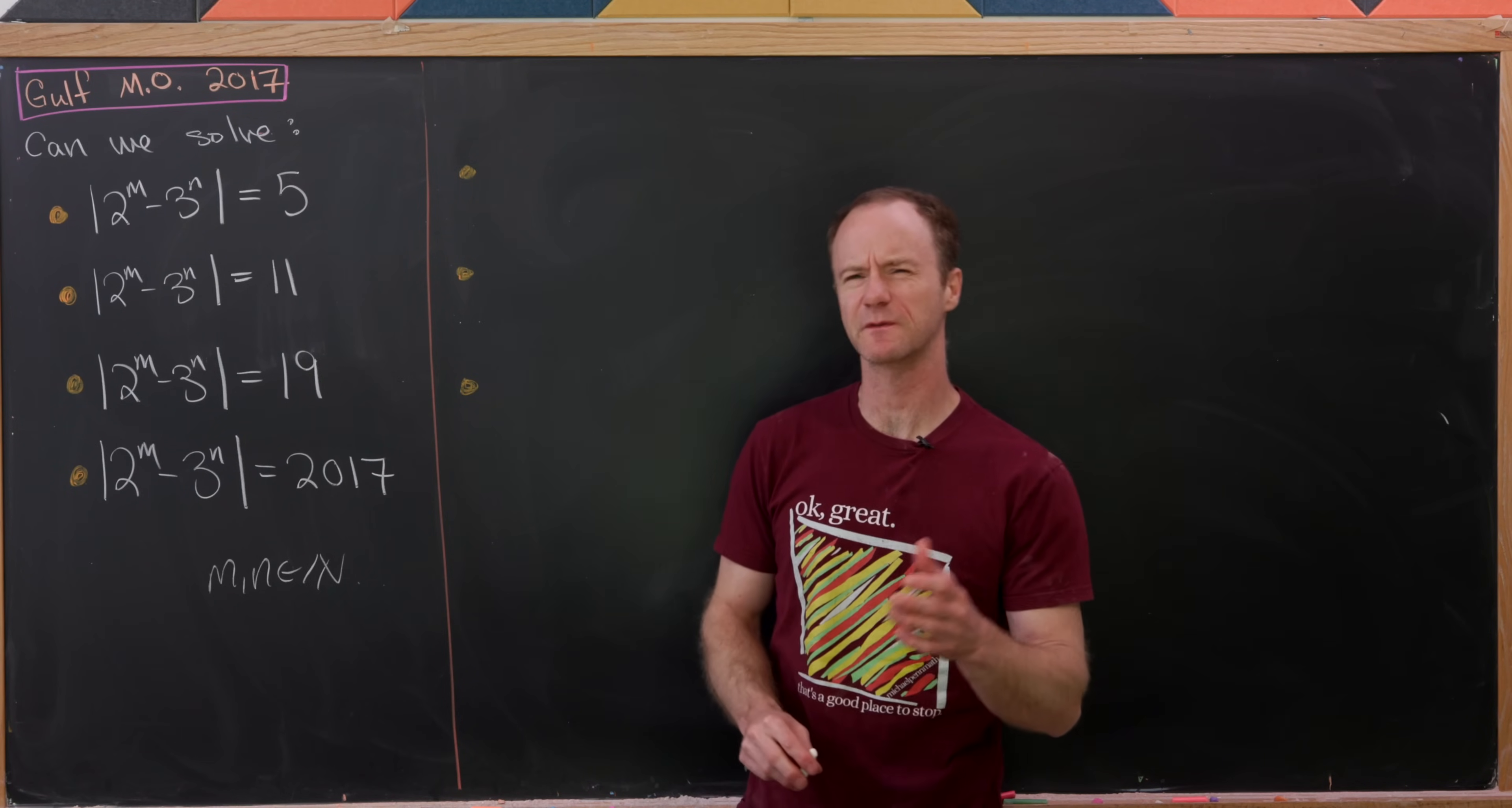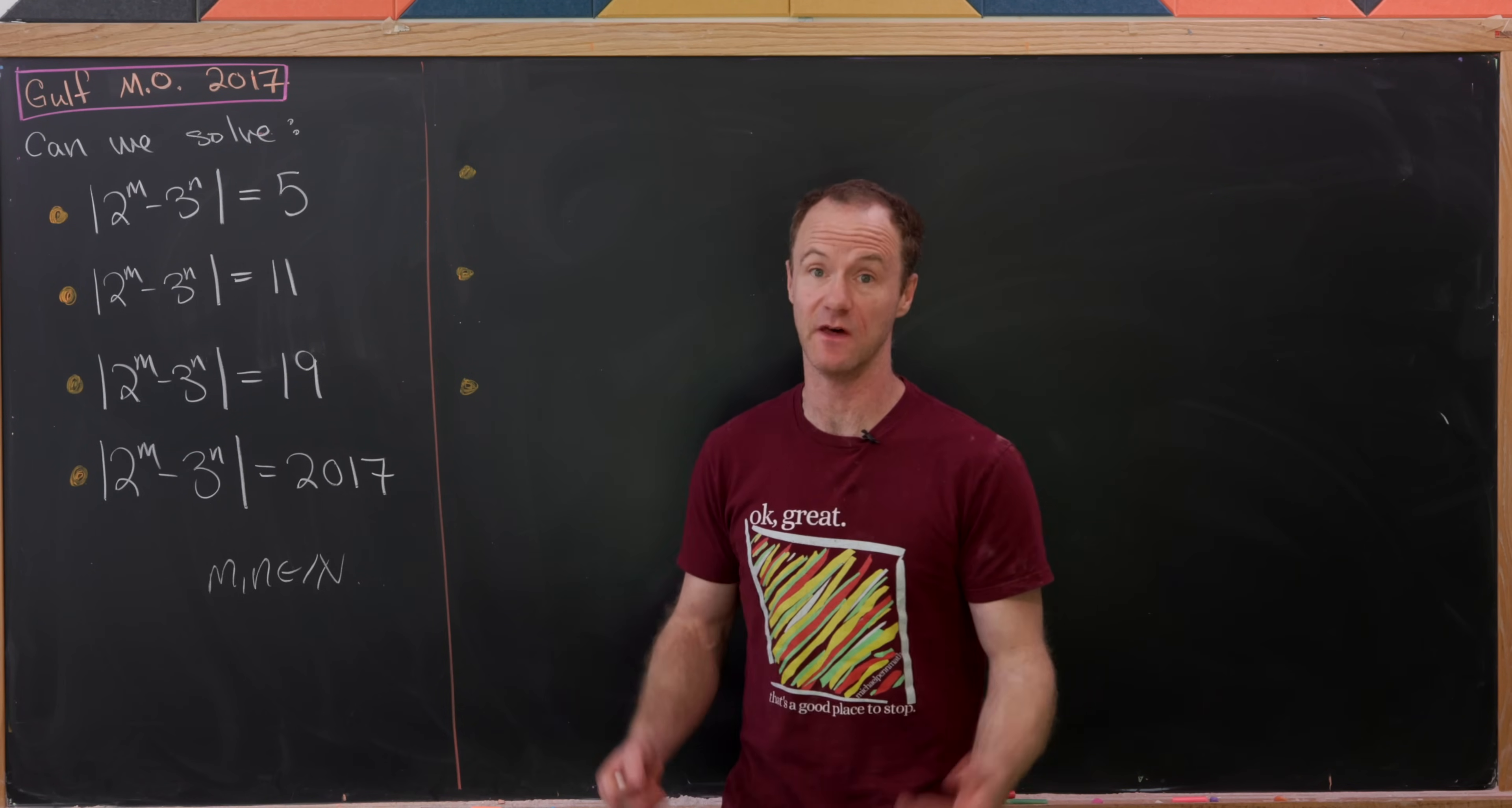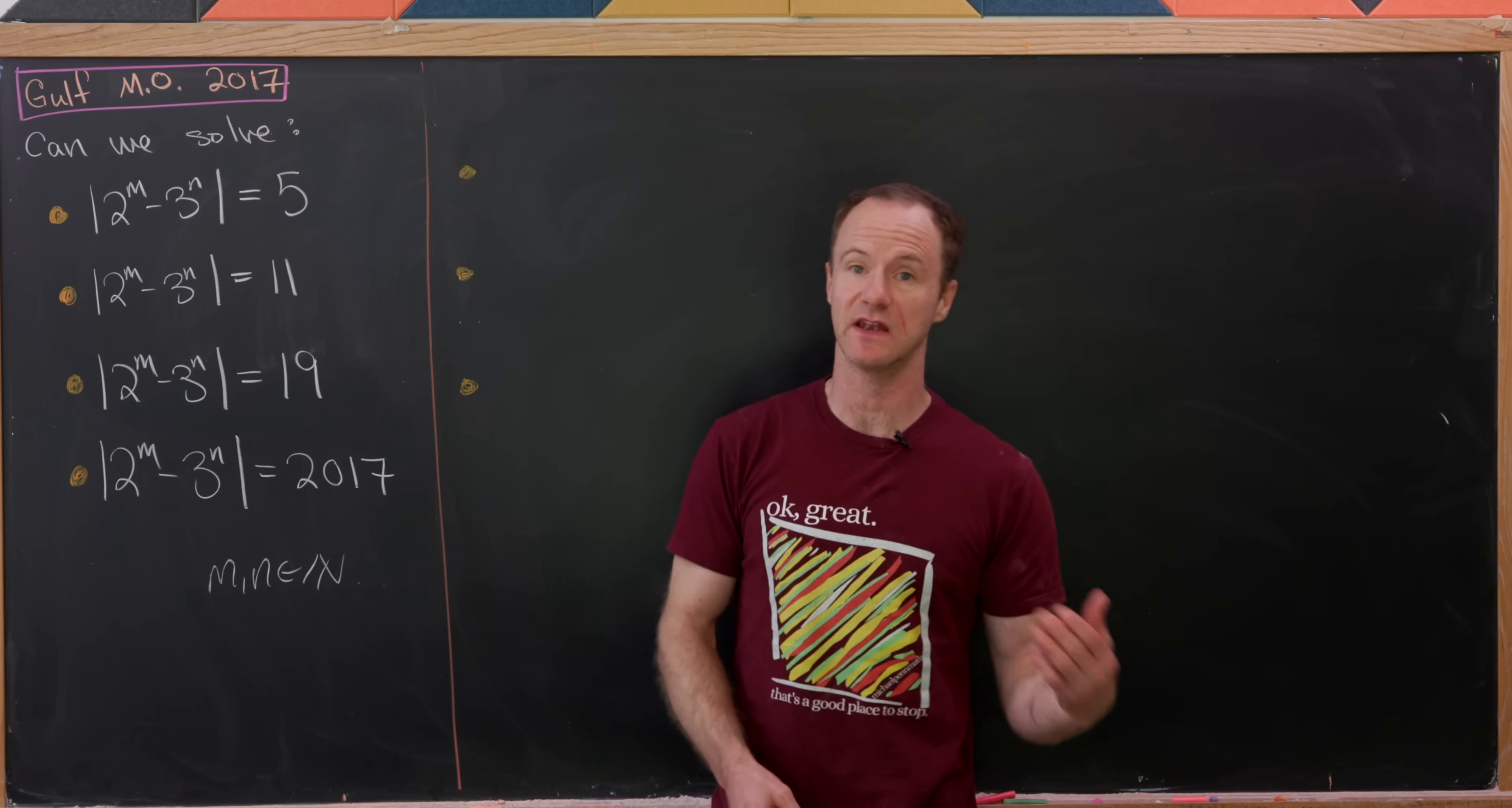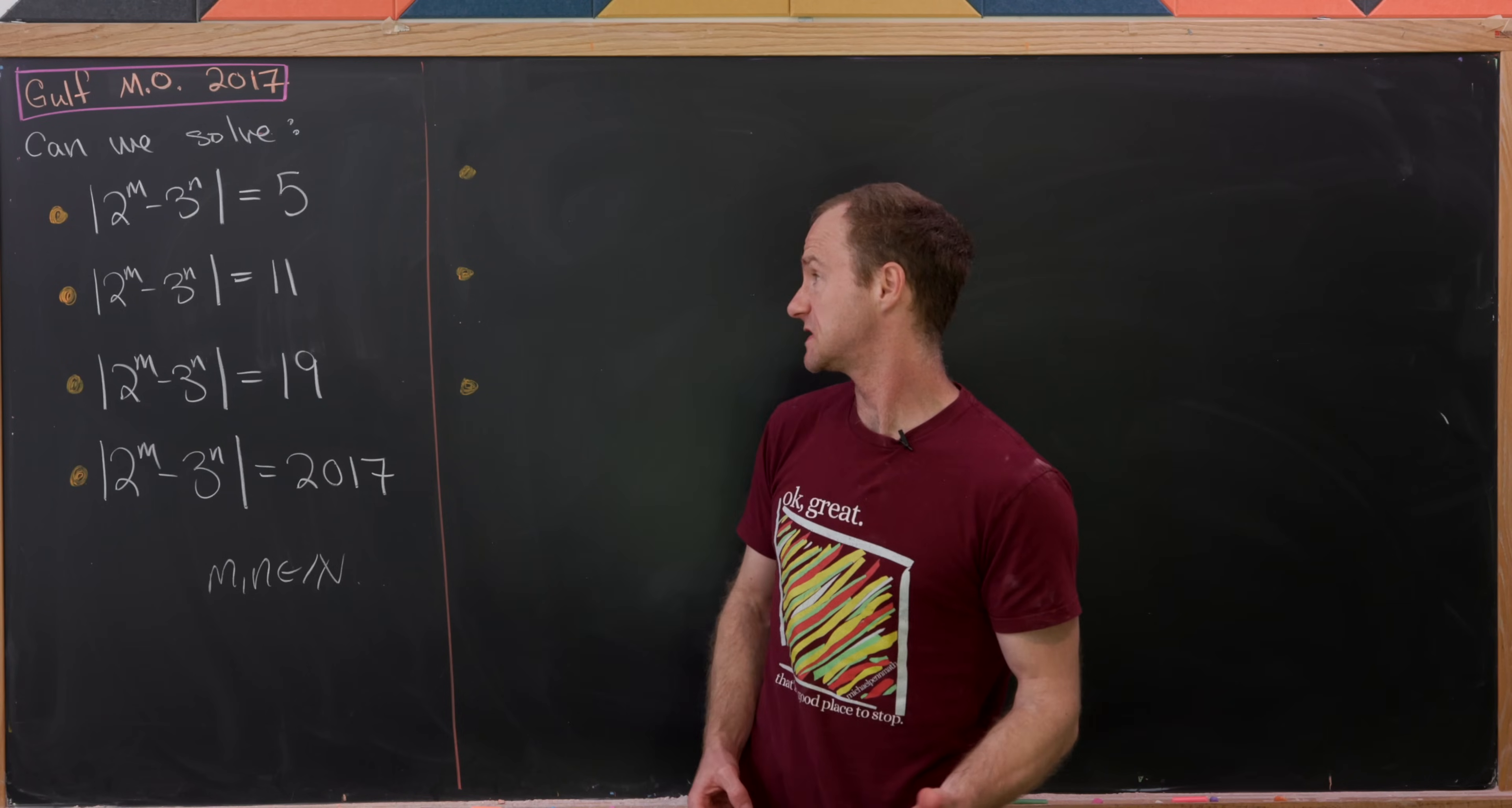Today I've got a nice number theory problem that comes from the Gulf Math Olympiad in 2017. So it's a four-parter. There are three warm-ups and then the main event. The main question is can we solve these equations? We've got the absolute value of 2 to the m minus 3 to the n equals 5, 11, 19, and 2017 where m and n are natural numbers. Let's get started.